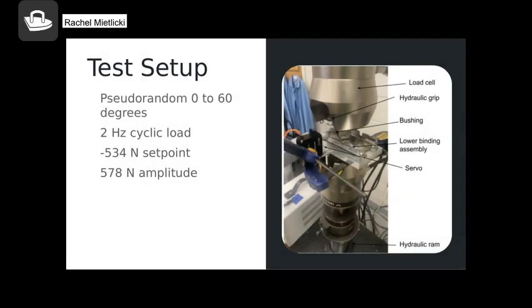To set up the test, we connected a servo to our binding assembly that moved at pseudorandom angles from 0 to 60 degrees, as that's the max range that the binding is able to move while touring. So this rotated the bushing and binding while the force is being applied to represent the touring movement. We used a set point of negative 534 newtons, which is about 120-pound force, and then an amplitude of 578 newtons, which brings the force acting on the material to about 250 pounds up and 10 pounds down, which simulates the movement of the 250-pound skier while touring.